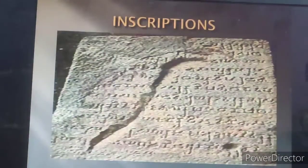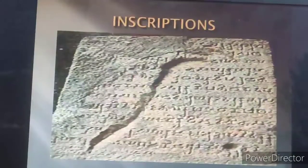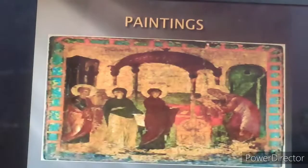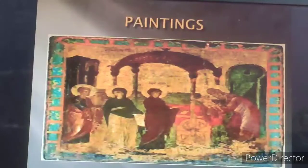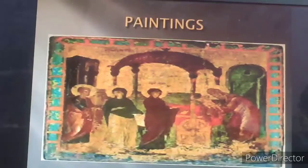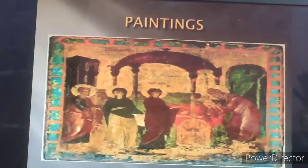Next is inscriptions. Inscriptions are writings engraved on hard surfaces — be it a rock, a metal, or a pillar. This is one example of an inscription. Next come paintings. Paintings tell us about the customs, food habits, dress, and jewelry of the medieval period. This is another example of a painting.